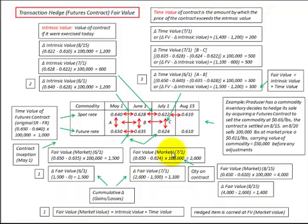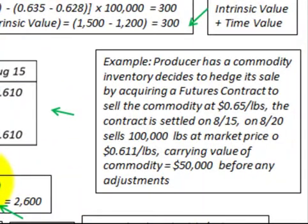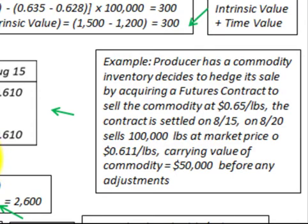For this example we'll have a producer that has a commodity inventory item such as grain or wheat, and he decides to hedge its sale by purchasing a futures contract. The details are shown here. The spot rates and future rates used in this example are based on a price per pound for that commodity item.